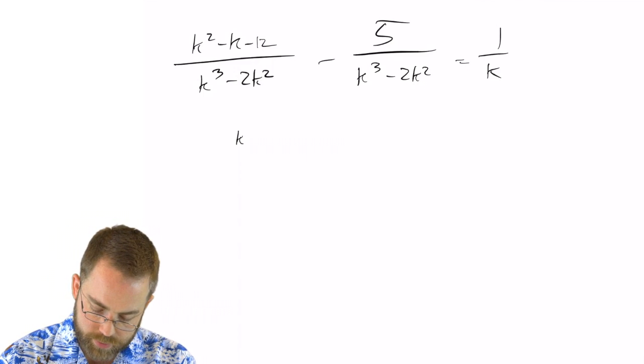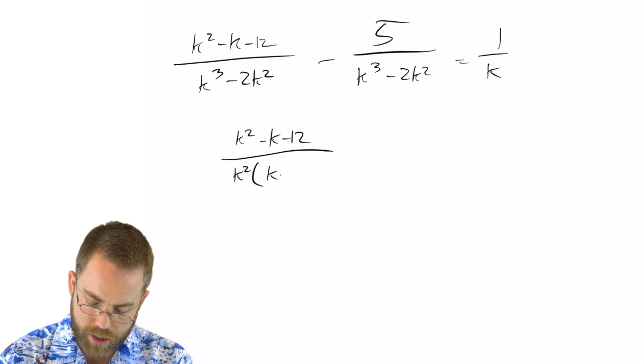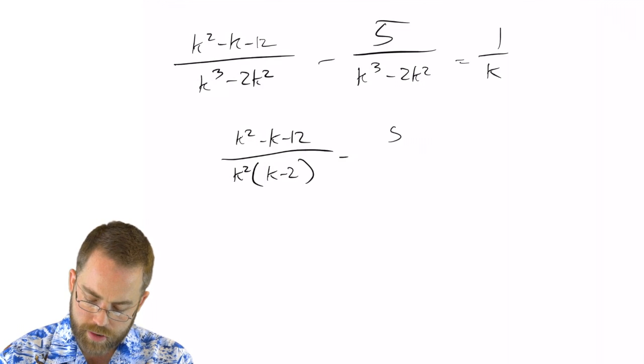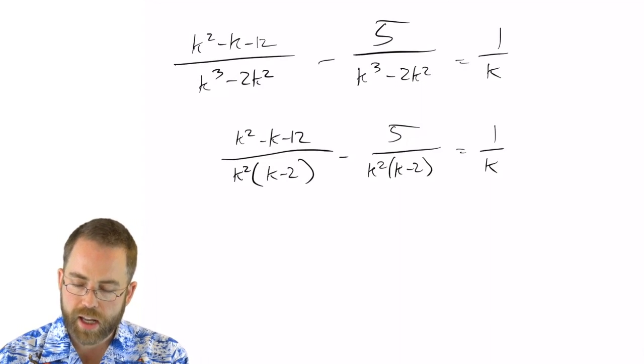So I'm going to rewrite this as k squared minus k minus 12, and I can take out a k squared, which leaves me k minus 2, and that's the same thing right here, k squared times k minus 2 equals 1 over k.